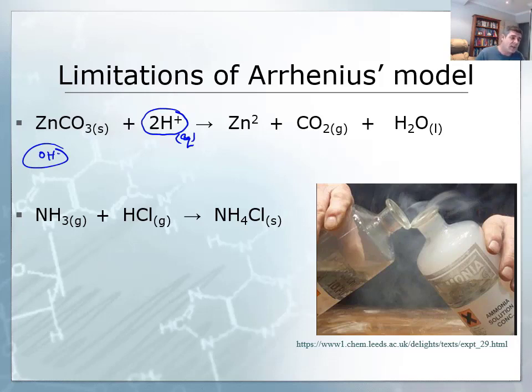So here's an example of a reaction: zinc carbonate plus an acid producing zinc ions, carbon dioxide, and water. We know this is an example of a neutralization reaction. We've looked at a few of these now, and we know this is neutralization because it's produced water and carbon dioxide.